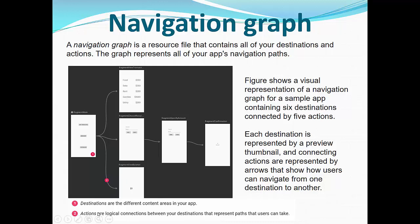Actions are the logical connections between your destinations that represent paths the user can take. For example, from the main fragment we can travel to a view fragment, choose fragment, or view balance fragment. And from the middle fragment — choose fragment — we can travel to a specify amount fragment or configuration fragment. Those are all the possible actions we can achieve using this navigation graph.